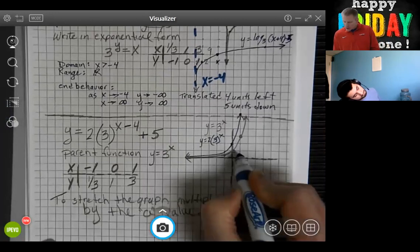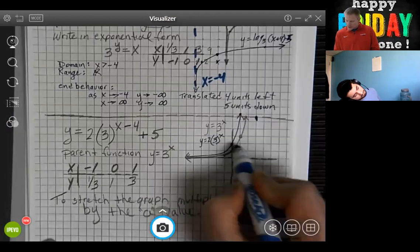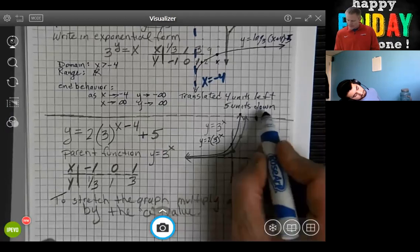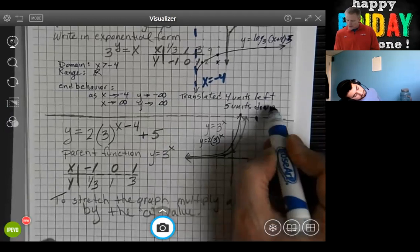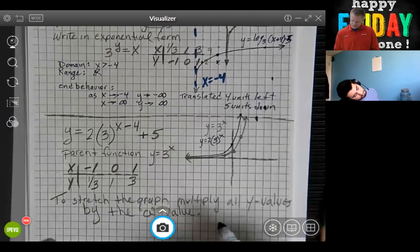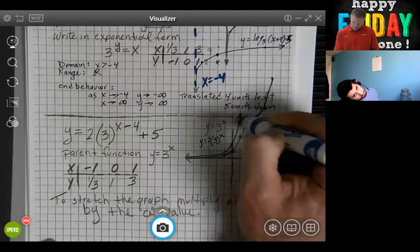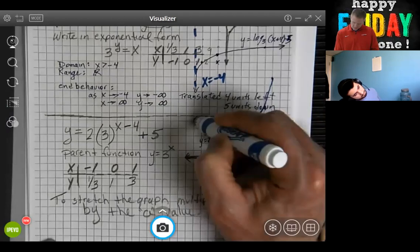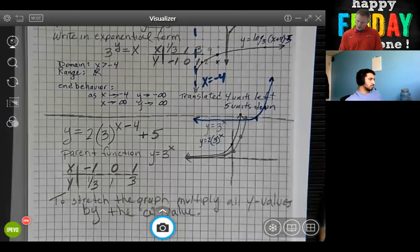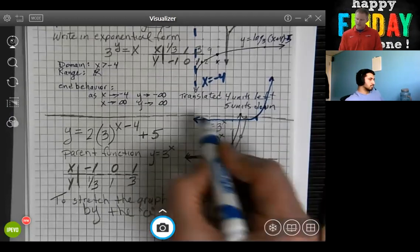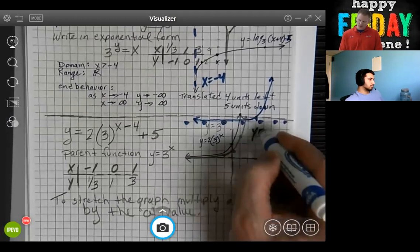So your graph is going to be there five units up. So you have this asymptote that's going through here at y equals five.